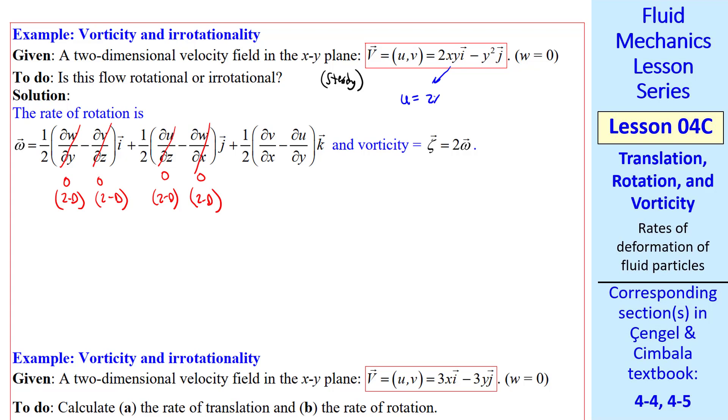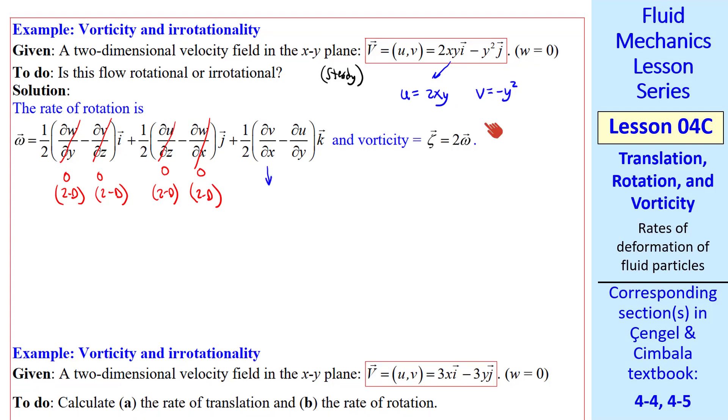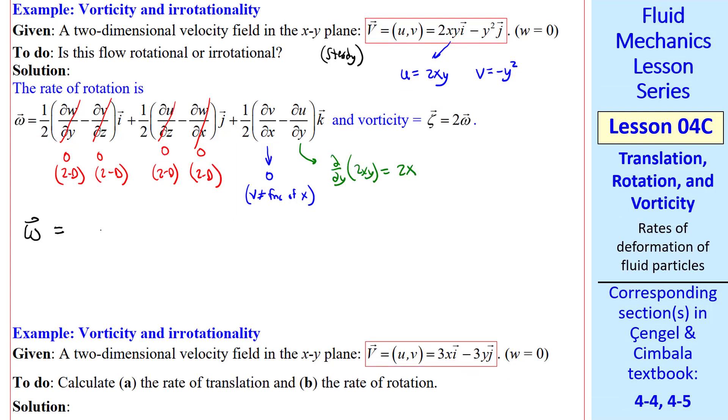From the given velocity vector, we see that U equal 2xy and V equal negative y squared. So what is del V del X? Well, X does not appear in the expression for V, so this is zero because V is not a function of X. What about del U del Y? Well, when we take a partial derivative, we treat the other variables as constants, so del U del Y is simply 2x. So for this velocity field, omega is 0i plus 0j. We have 2x with a negative sign and a 1 half, which gives negative Xk. Thus, omega is negative Xk, and vorticity is simply twice that.